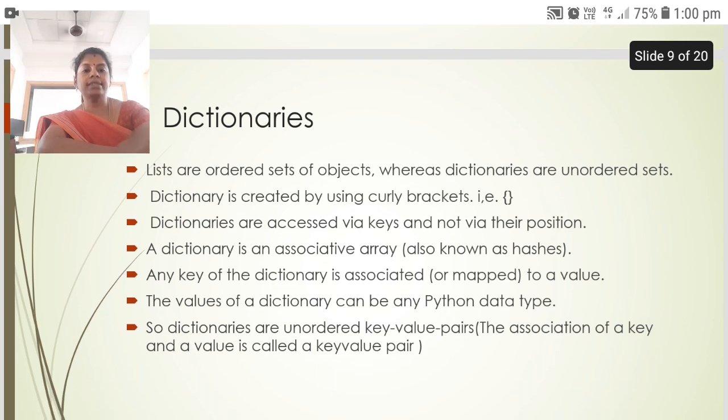The next is the dictionary. Lists are ordered sets of objects, whereas dictionaries are unordered sets. Dictionary is created by using curly brackets. Dictionaries are accessed via keys and not via their position. A dictionary is an associative array, known as hashes. Any key of the dictionary is associated to a value. The values of dictionary can be any Python data type. Dictionaries are unordered key value pairs.